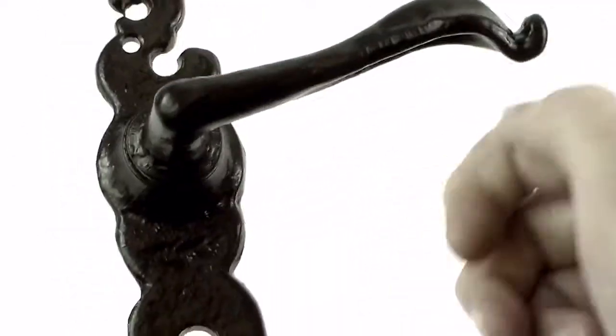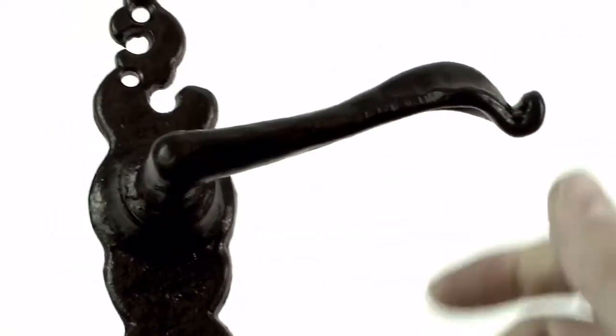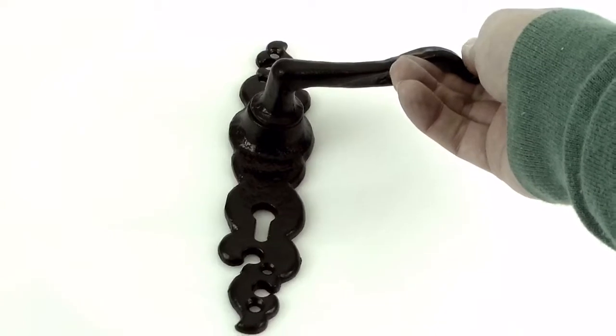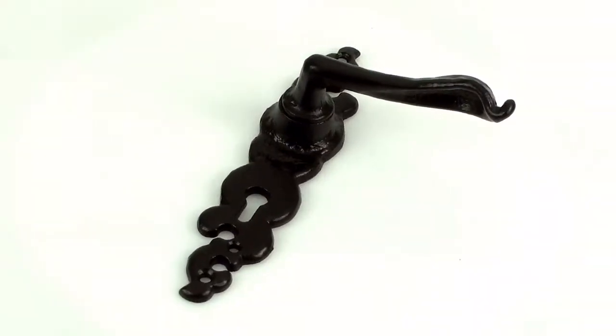They also black powder coat them and then paint them as well. As you can see this one's a sprung door handle so it comes in a lock and a latch version and obviously supplied as a pair.